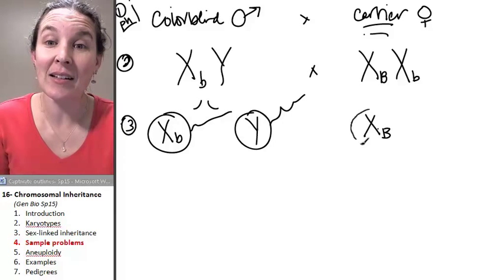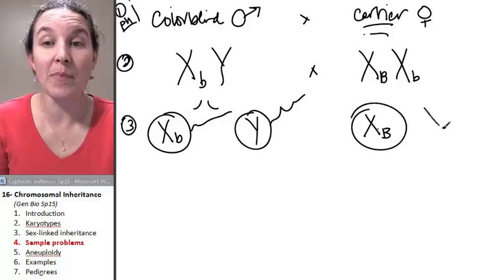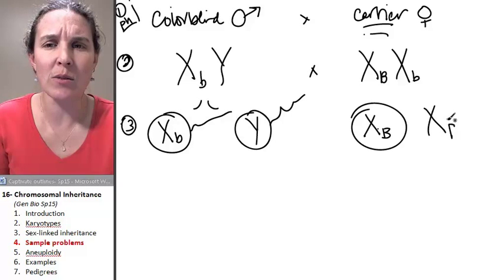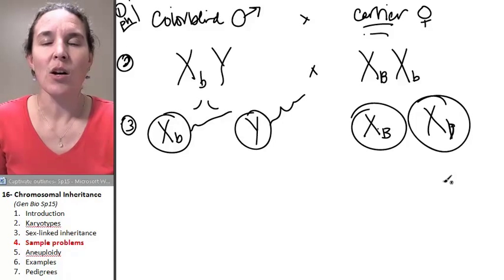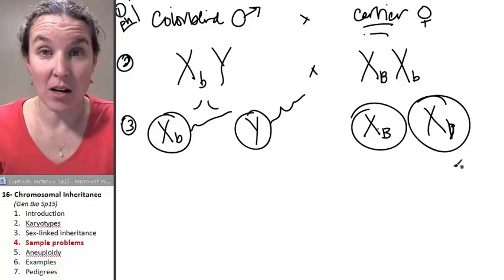And in Ladyland, we're going to get a big X. That was a good rescue operation. We've got a big B and we've got a little b on our two X chromosomes.